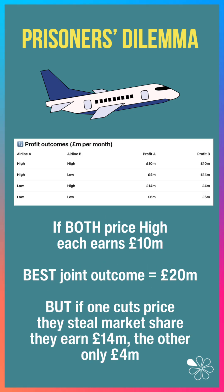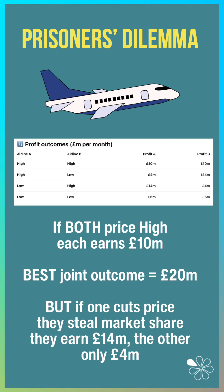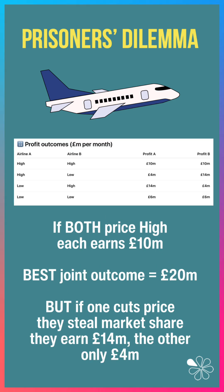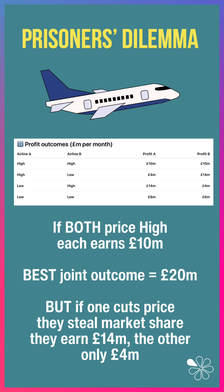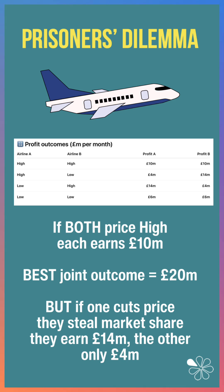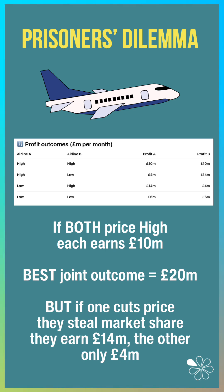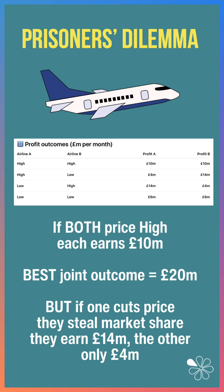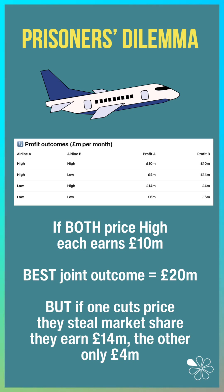Here's a table showing some of the possible profit outcomes in a payoff matrix. Both airlines charge high prices — each earns £10 million of profit. That's the best joint outcome: a combined profit of £20 million.